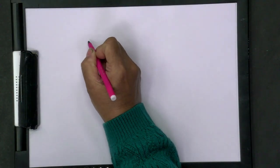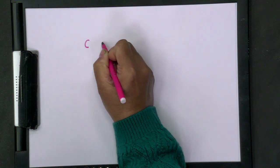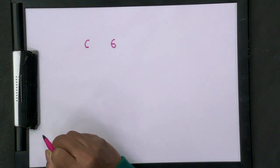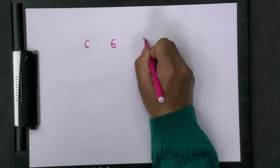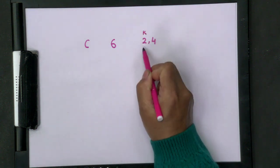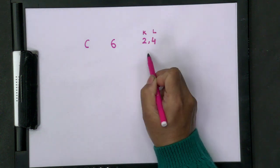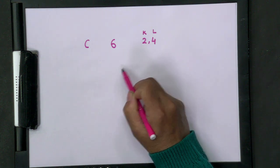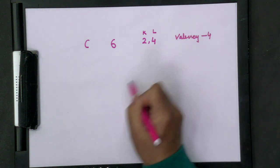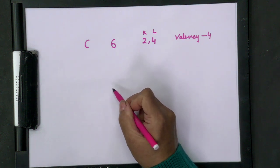The first topic is the atom carbon. The symbol of carbon is C, its atomic number is six, and its electronic configuration is 2, 4 — meaning in the K shell there are two electrons and in the L shell, the outermost shell, there are four electrons. So its valency is four.